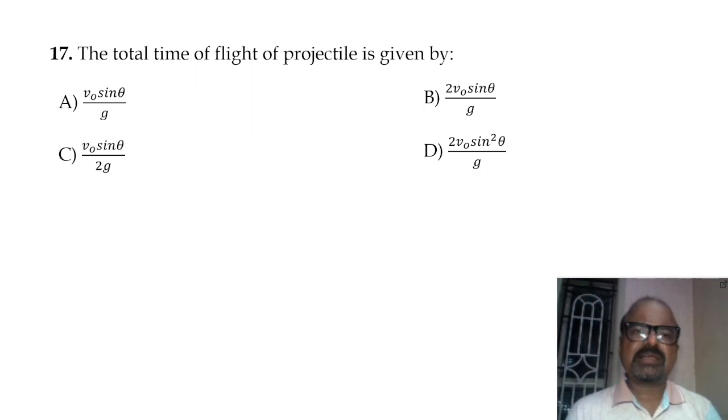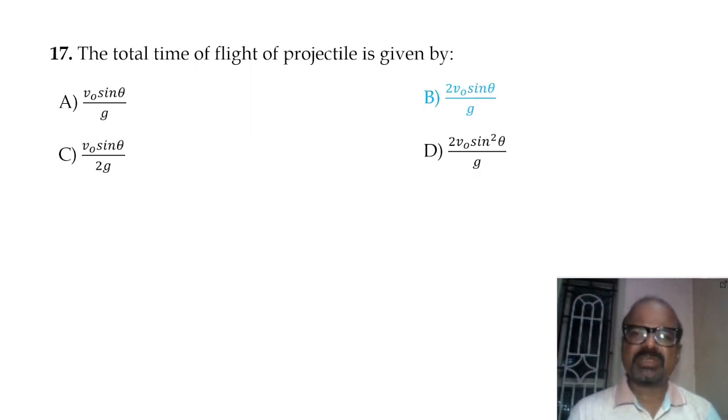The total time of flight of a projectile is given by the formula: T equals 2 v0 sin theta divided by g.